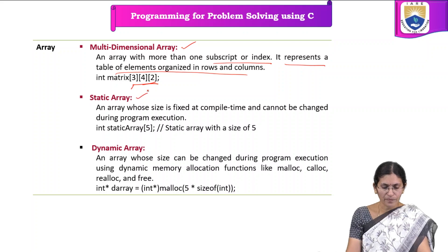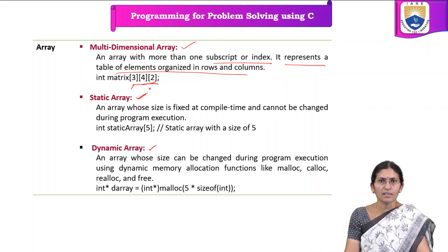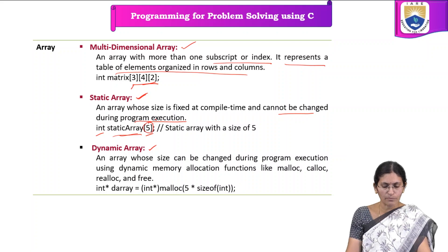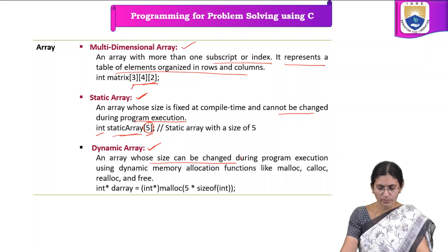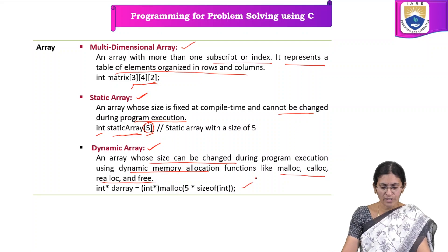Based upon whether the size can be increased or decreased, we have static arrays and dynamic arrays. A static array has its size fixed at compile time and we cannot change the size during program execution. The declaration specifies data type, name, and size — once the size is fixed at compile time, it cannot be changed. A dynamic array is an array whose size can be changed during program execution using dynamic memory allocation functions such as malloc, calloc, realloc, and free.